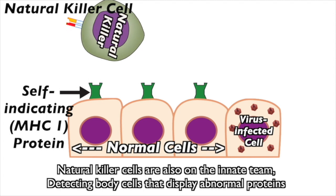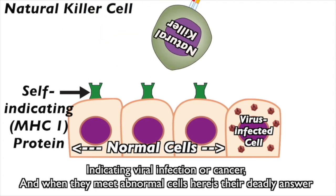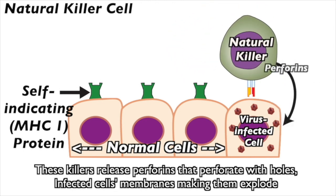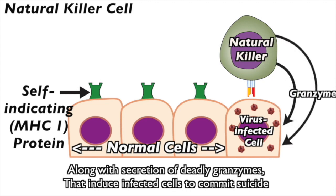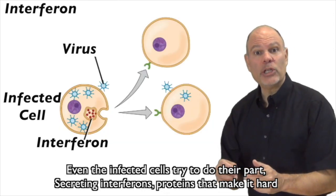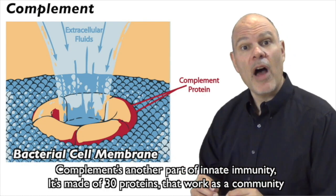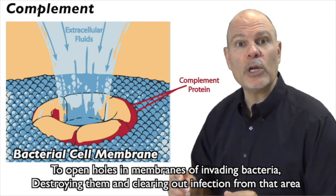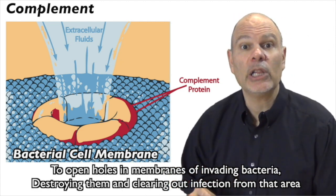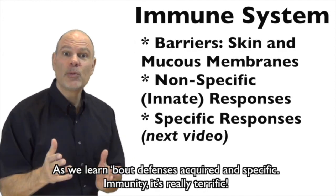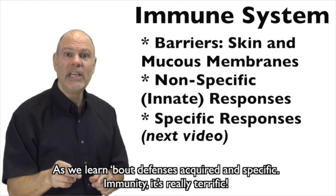Natural killer cells are also on the innate team, detecting body cells that display abnormal proteins indicating viral infection or cancer. When they meet abnormal cells, these killers release perforins that perforate holes in infected cells' membranes making them explode, along with secretion of deadly granzymes that induce infected cells to commit suicide. Even the infected cells try to do their part, secreting interferons — proteins that make it hard for viruses to penetrate the cell membranes of uninfected nearby cells. Complement is another part of innate immunity: it's made of 30 proteins that work as a community to open holes in membranes of invading bacteria, destroying them and clearing out infection. Now that's innate immunity — part one of our song — so join us in immune part two to learn about acquired and specific immunity.